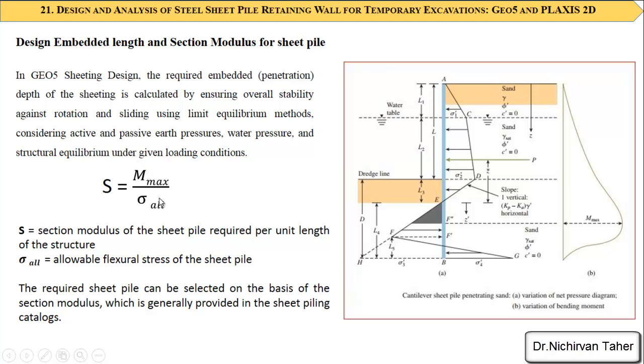Also we will divide the maximum moment by allowable stress, so the elastic section modulus of the sheet pile which is required per unit length can be calculated. And this section modulus you can find generally in sheet piling catalogs which is provided by the company and factories.